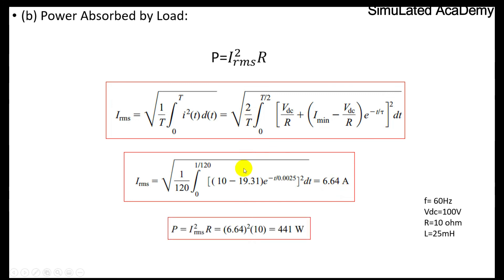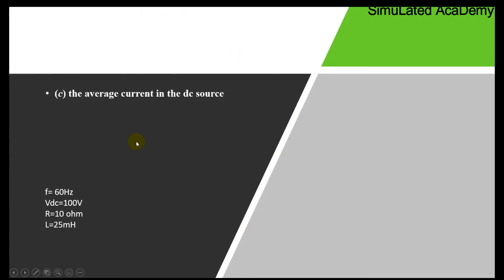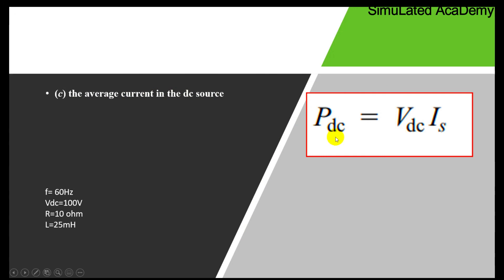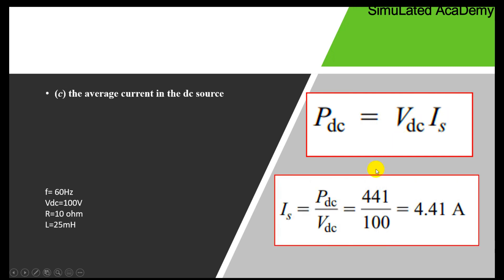The power absorbed is P = I_RMS² · R = (6.64)² · 10 = 441 W. That is the power absorbed by the resistive load of 10 ohm. For the third part — the average current in the DC source — we use: P_DC = VDC · I_source, so I_source = P_DC / VDC = 441 / 100 = 4.41 A.